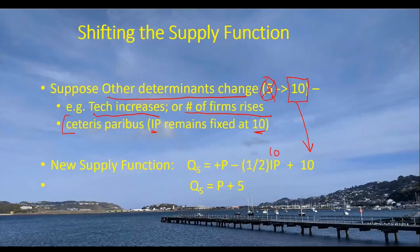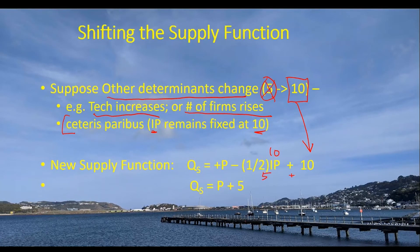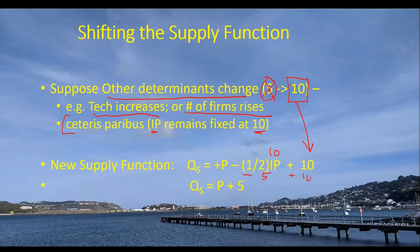And when we do that, you're going to notice that P minus 1 half times 10, this becomes 5. This is 10. And this is a minus 5. So we end up with 10 minus 5 is equal to the 5. And this becomes our new equation for the supply function. So when technology increases or the number of firms increase, that shift parameter is going to rise up from 0 to 5.